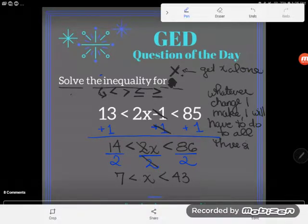And now, I know I'm done because my x is alone. It's alone in the middle here. And so, what I just figured out is that x is between 7 and 43. 7 is less than x, but x is less than 43.